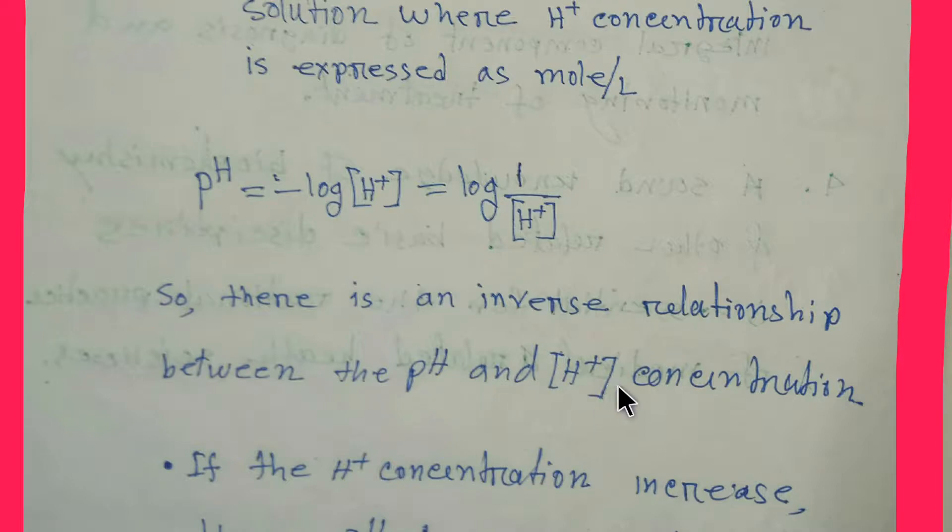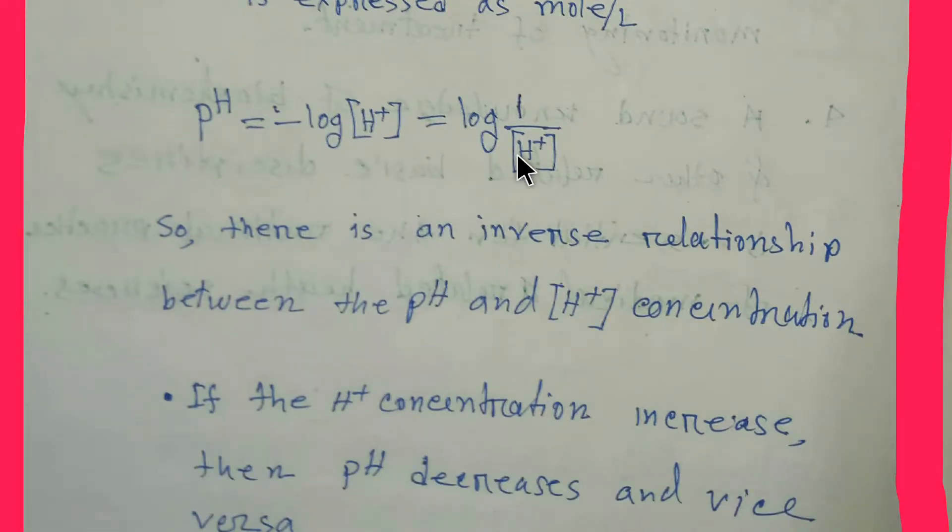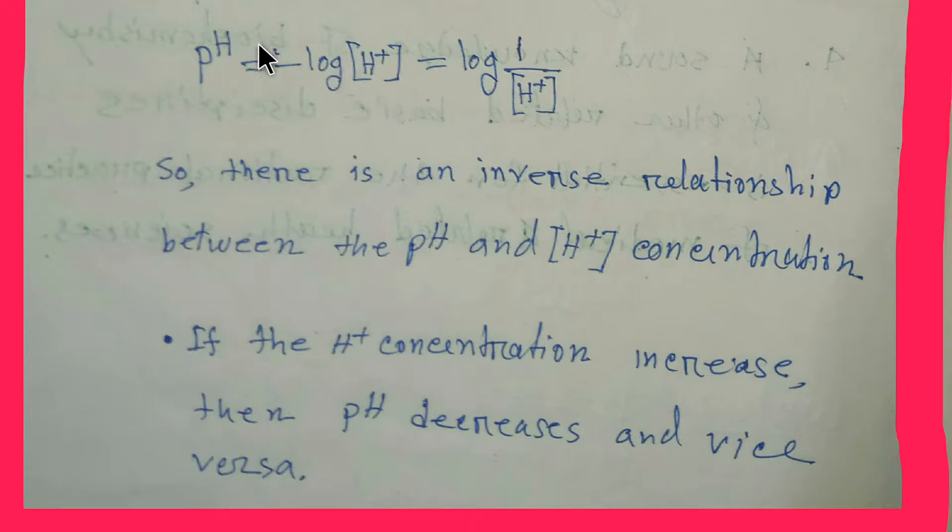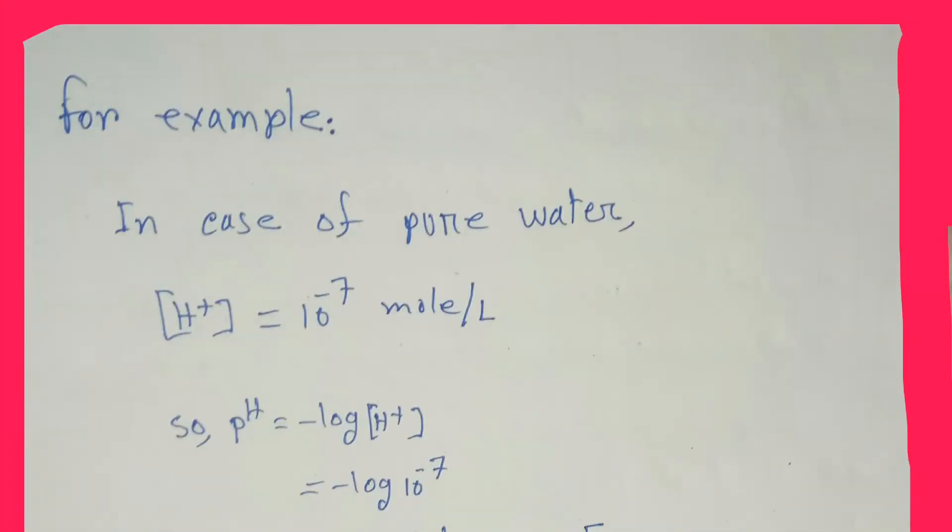There is an inverse relationship between the pH and hydrogen ion concentration. If the concentration of hydrogen ion increases, then the value of pH decreases, and vice versa. So inverse relation means one will go up and another will go down. Please remember this equation.